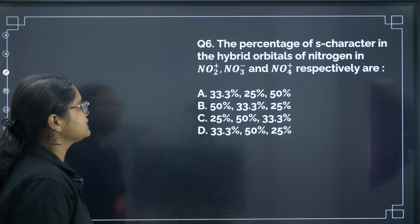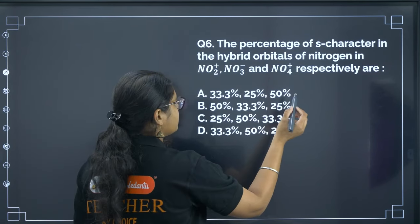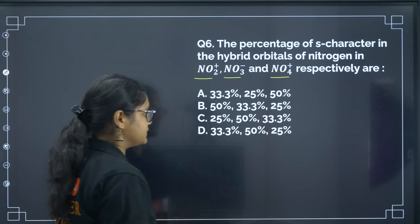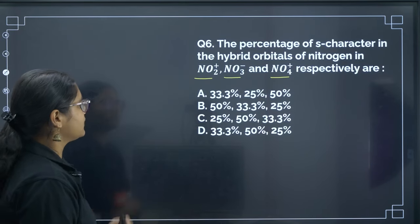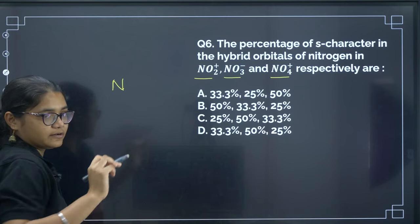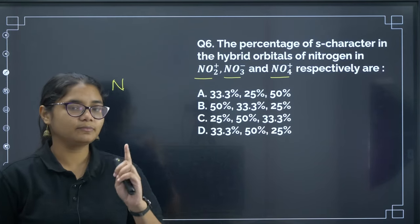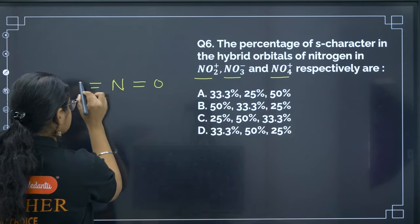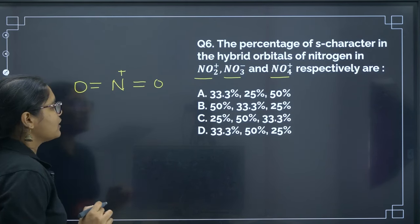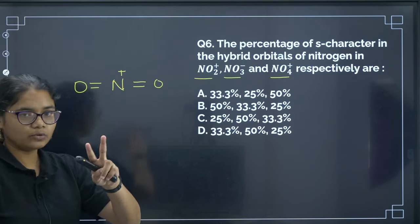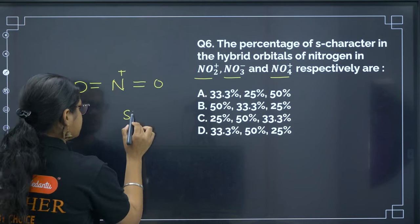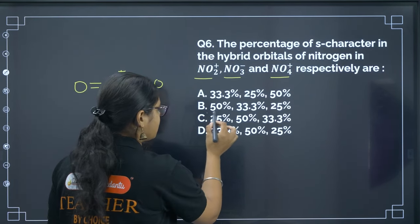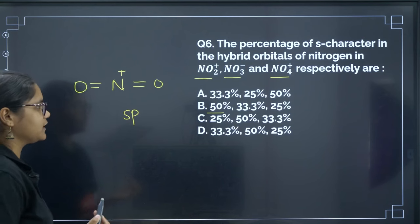Next: the percentage of S character in hybrid orbitals of nitrogen in NO2⁺, NO3⁻, and NO4⁺. For NO2⁺, nitrogen has 4 valence electrons (5 − 1 for the + charge). It forms 2 sigma bonds, so hybridization is SP. The S character = 100/2 = 50%. Only one option has 50%, so that must be the first value.